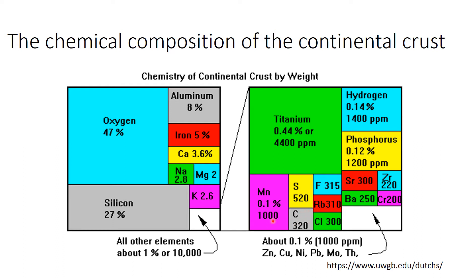The units here are in parts per million. So for instance, titanium — there's 4,400 grams of titanium in a million grams of rock. That's what the units are showing.